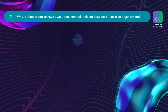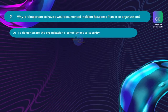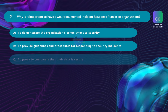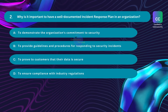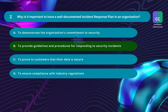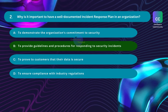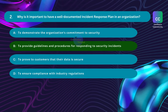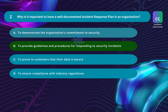Question number two: Why is it important to have a well-documented incident response plan in an organization? Option A: To demonstrate the organization's commitment to security. Option B: To provide guidelines and procedures for responding to security incidents. Option C: To prove to customers that their data is secure. Option D: To ensure compliance with industry regulations. The correct answer is Option B. An incident response plan is a comprehensive set of documented guidelines and procedures that outline the steps to be taken when a security incident occurs. It helps in responding promptly and effectively, and establishes communication and coordination mechanisms among departments.